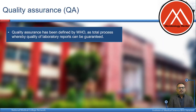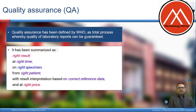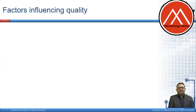Quality assurance has been defined by WHO as a total process whereby the quality of laboratory results can be guaranteed. It has been summarized as the right result at the right time on the right specimen from the right patient, with results interpretation based on correct reference data and at the right price.